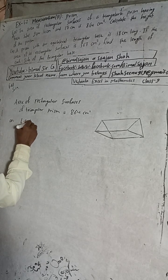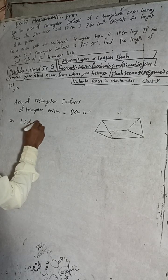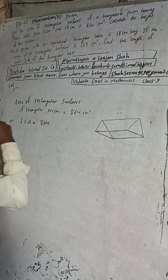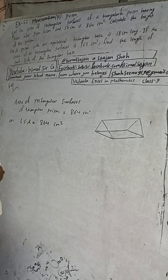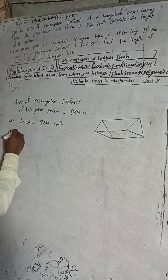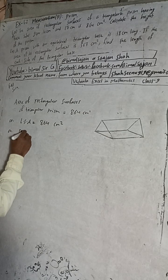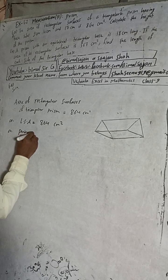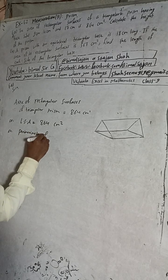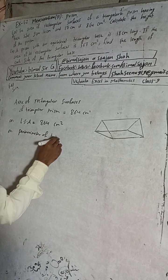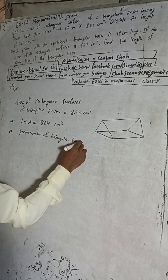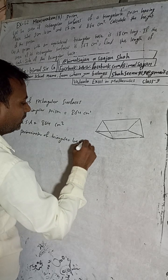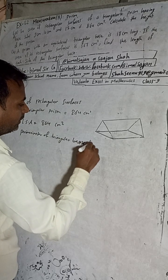So, lateral surface area is equal to 864 cm². The lateral surface area formula is: perimeter of the triangular base into length — or height. We need to find this height.